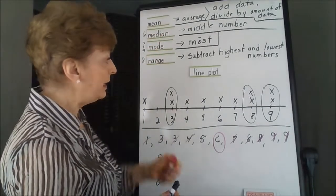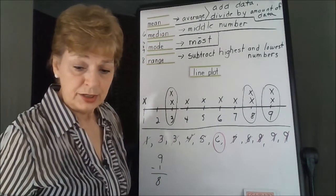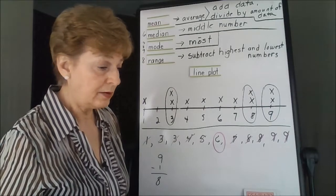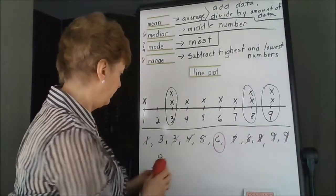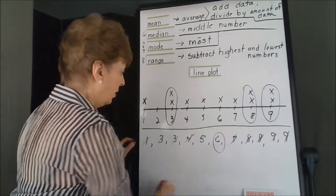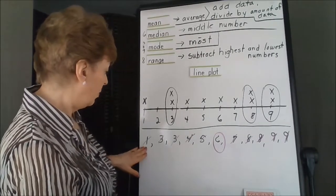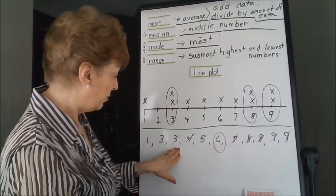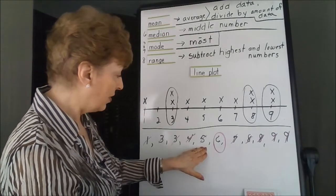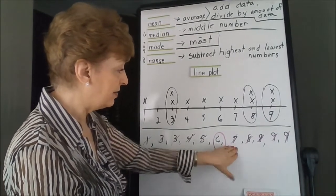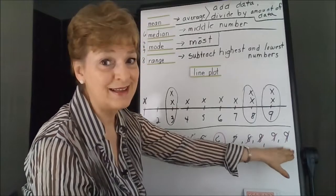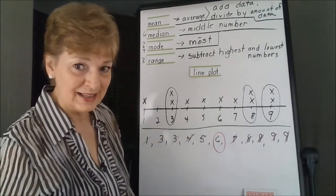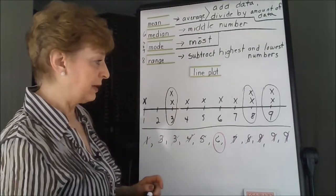Now the mean is the average. So we're going to have to do a calculation. We're going to need to add up 1 plus 3, plus 3, plus 4, plus 5, plus 6, plus 7, plus 8, plus 8, plus 9, plus 9. Let's see if we can do this a little bit easier.